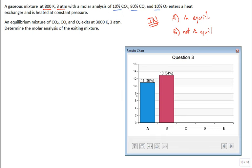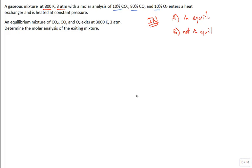Let's vote: is the inlet mixture (a) in equilibrium, or (b) not in equilibrium? Some think it's in equilibrium, some think it's not. There's nothing in the problem statement that says it's an equilibrium mixture. Let's prove it by going back to our equilibrium equation with the K values. At 1000 K (rounding to avoid interpolation), K = 10^(−10.221) from Table A27.